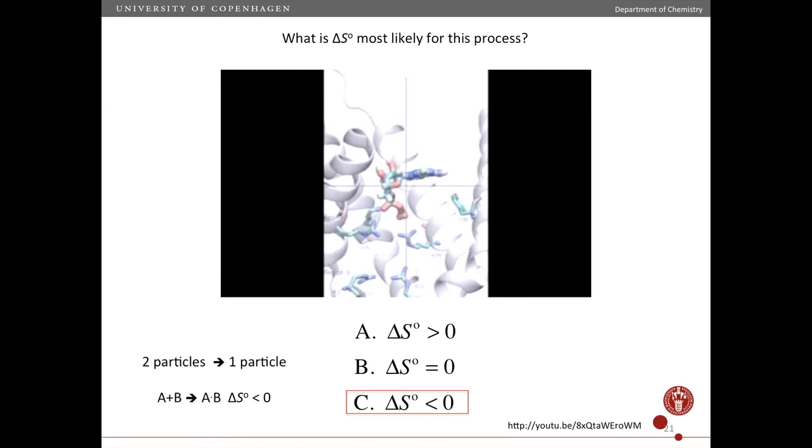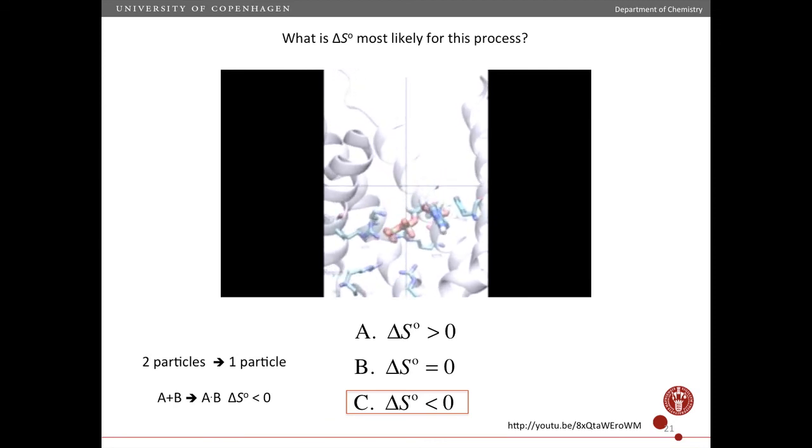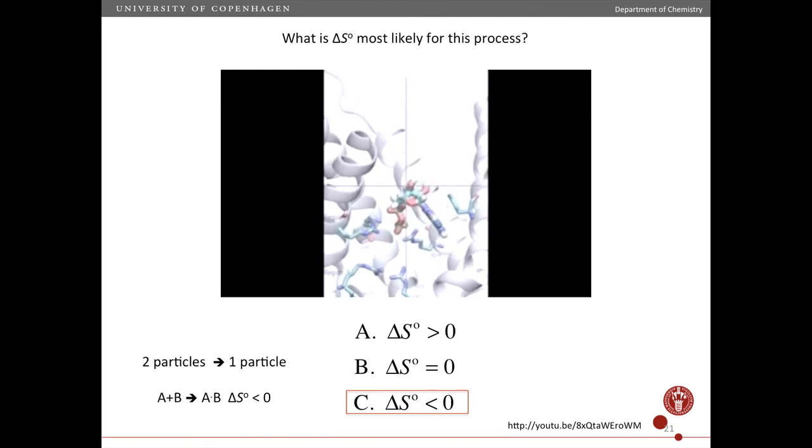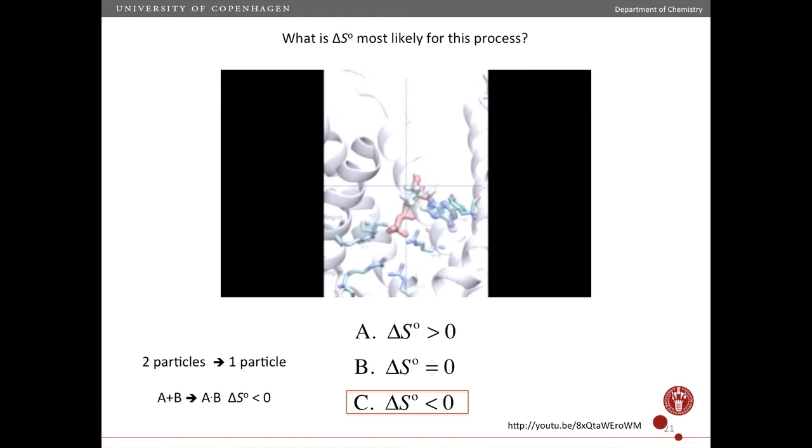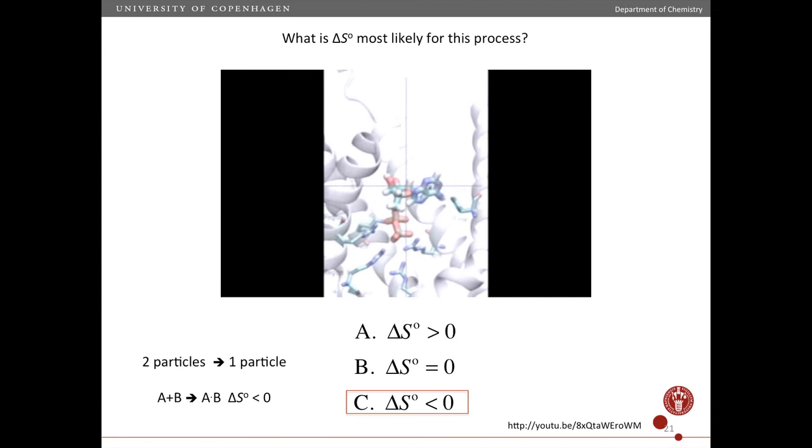Another way to think about it is that as you form more and more hydrogen bonds between the two molecules, the molecule and the protein, the freedom to move becomes less. Right? So in the bound state, the one we're starting to see now, the molecule has less freedom to move, therefore it has less entropy. And therefore, the entropy change is negative.